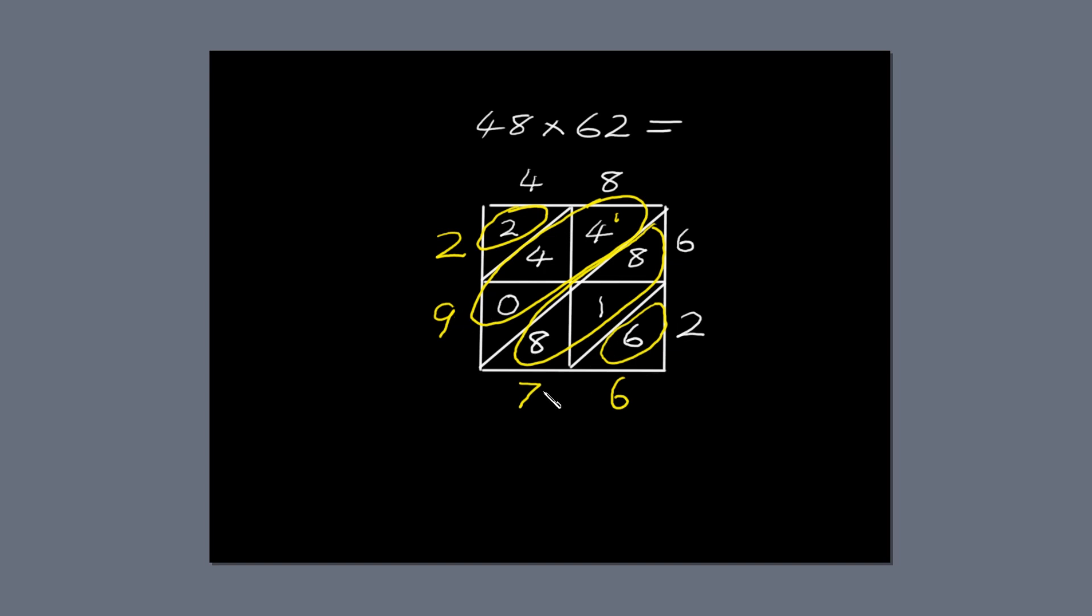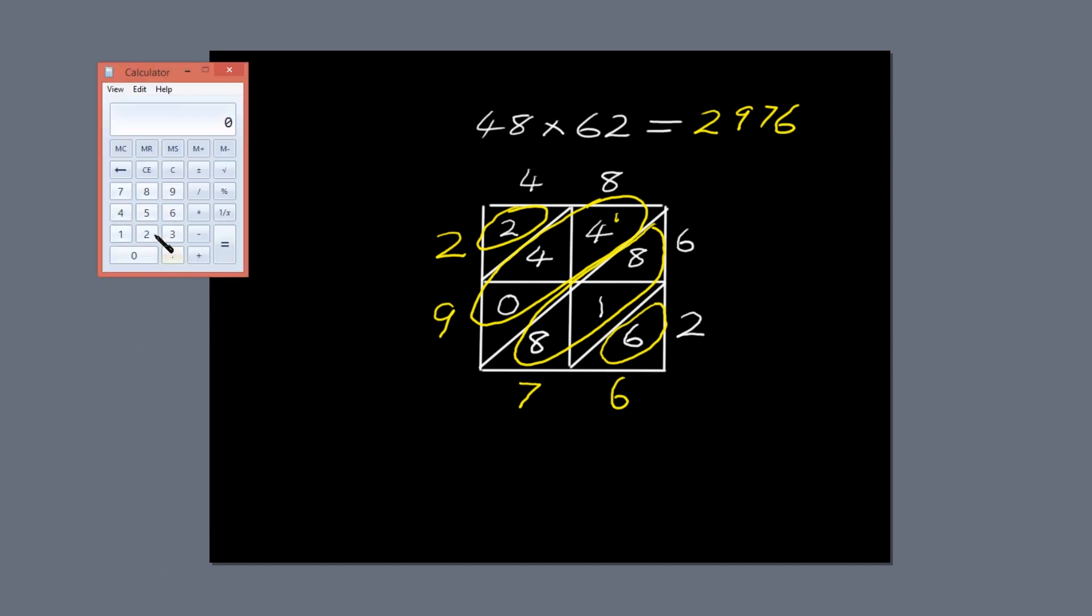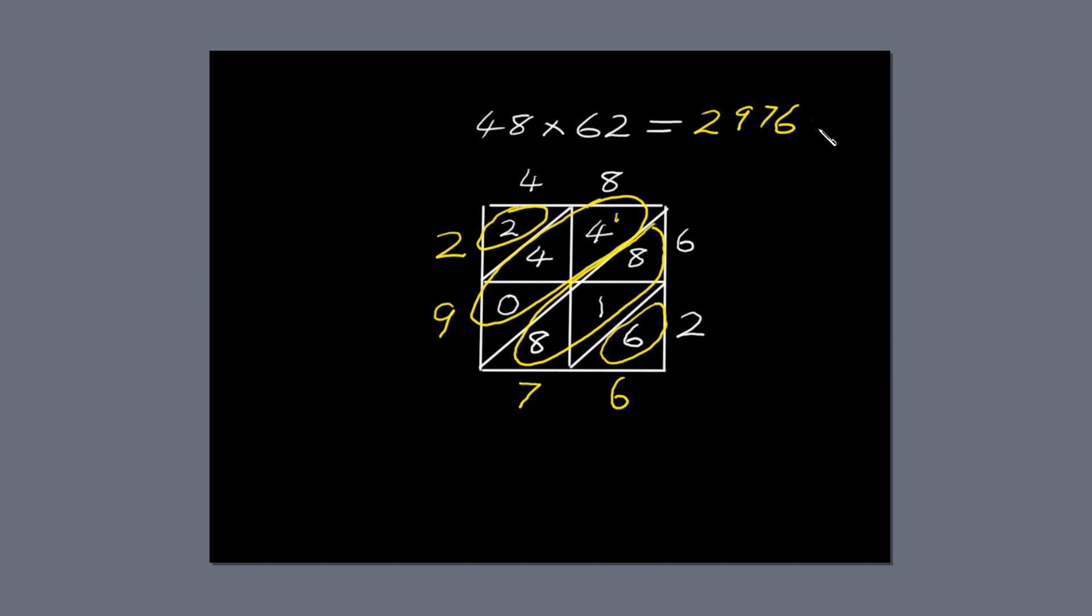2, 9, 7, 6. 48 times 62 equals 2,976. I'm going to check the answer on my calculator, but I'm allowed to do that because I'm not a slave. 48 times 62 equals 2,976. So the answer's correct.